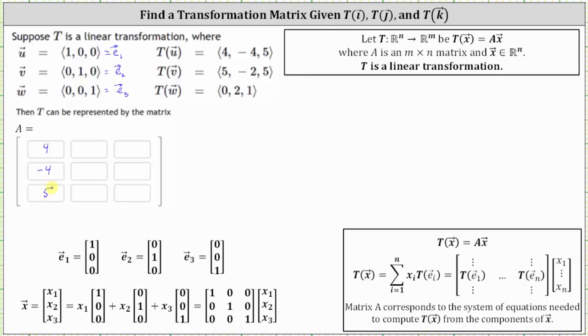And because the transformation of vector v, which is e sub two, is equal to the vector (5, -2, 5), the vector (5, -2, 5) is the second column of the transformation matrix.